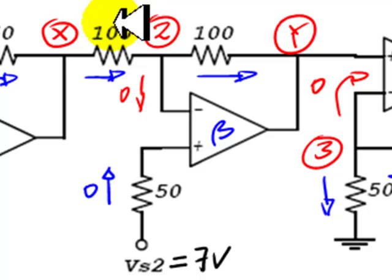KCL 2 is Vx minus V2 over 100 equals to Vx minus Vy over 100.